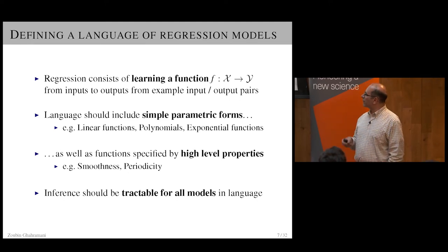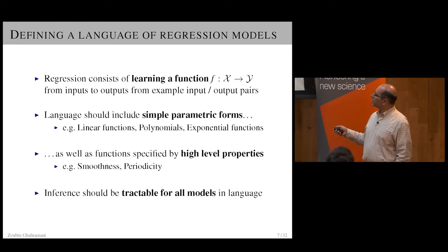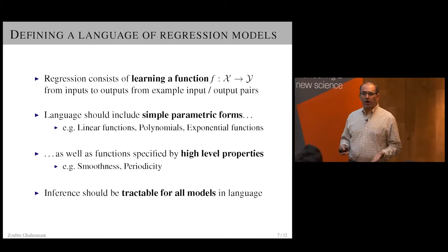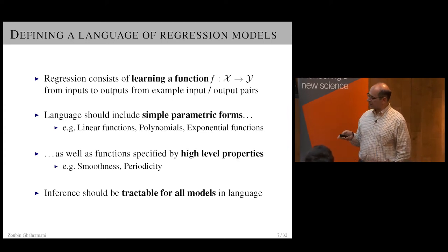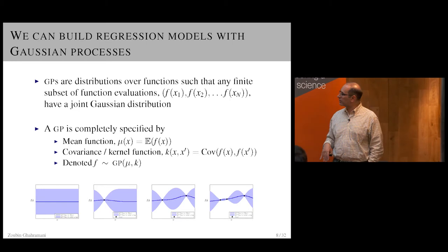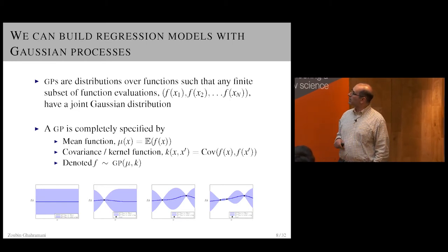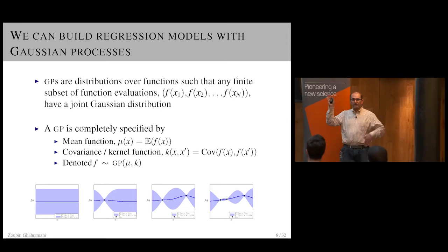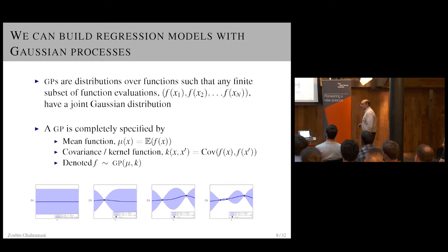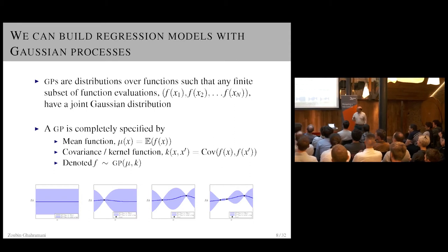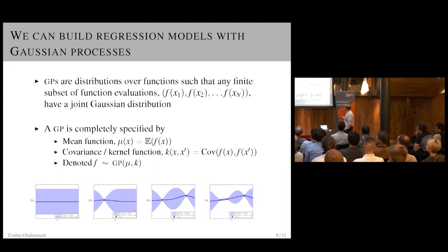We want inference to be tractable for all models in the language. The models we're going to use as one of the workhorses of the automatic statistician are Gaussian processes. A Gaussian process is just a way of defining distributions over functions — we start with a distribution over functions and then condition on the data to get a posterior distribution over functions, using Bayesian inference.